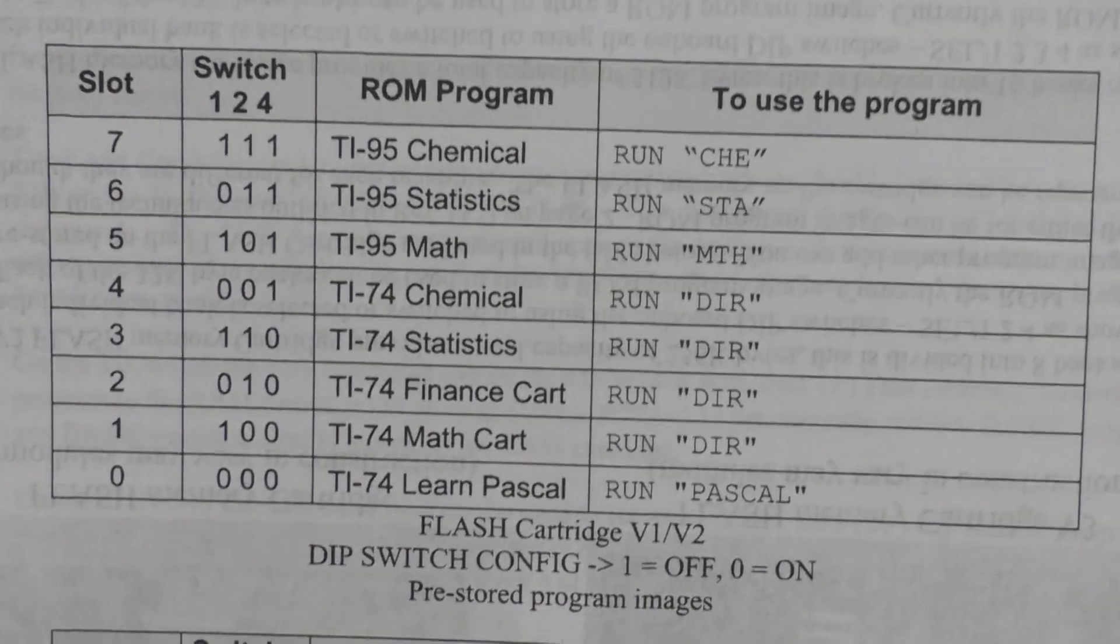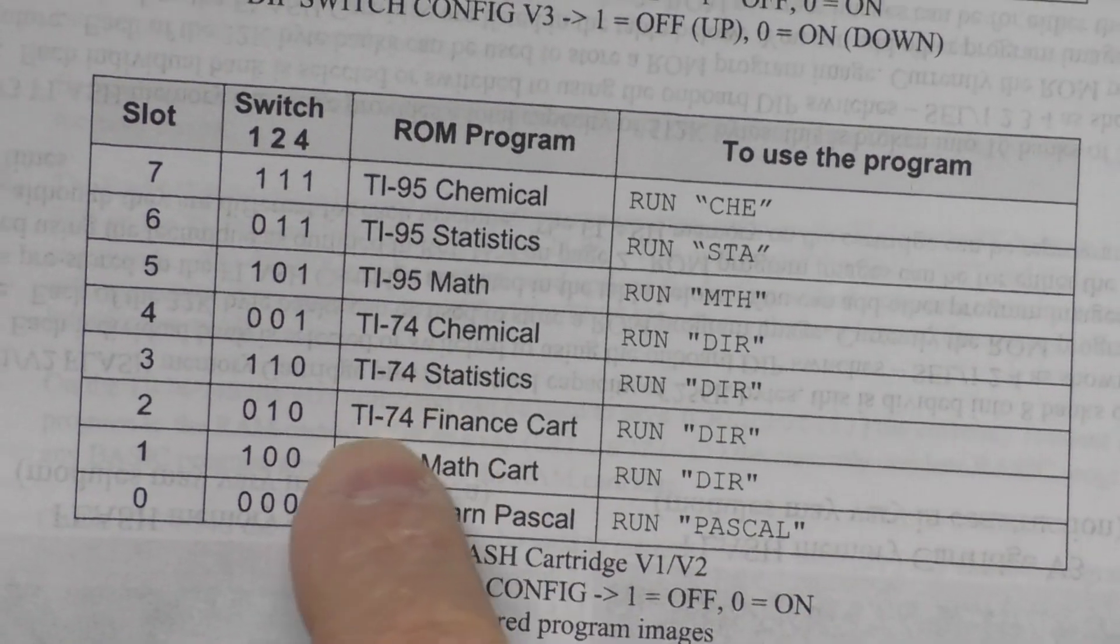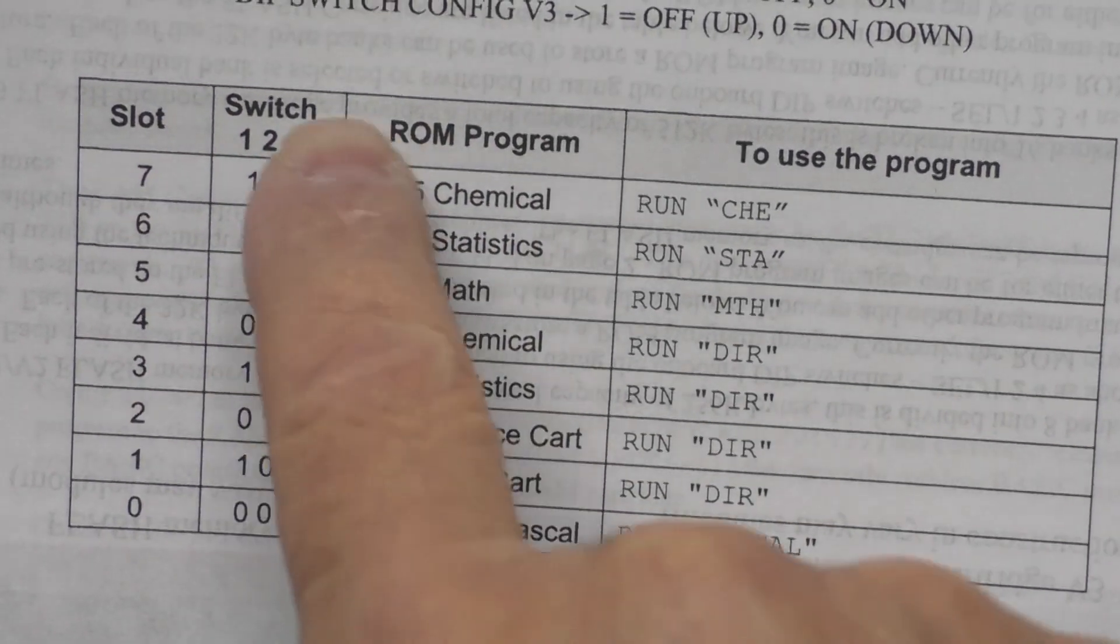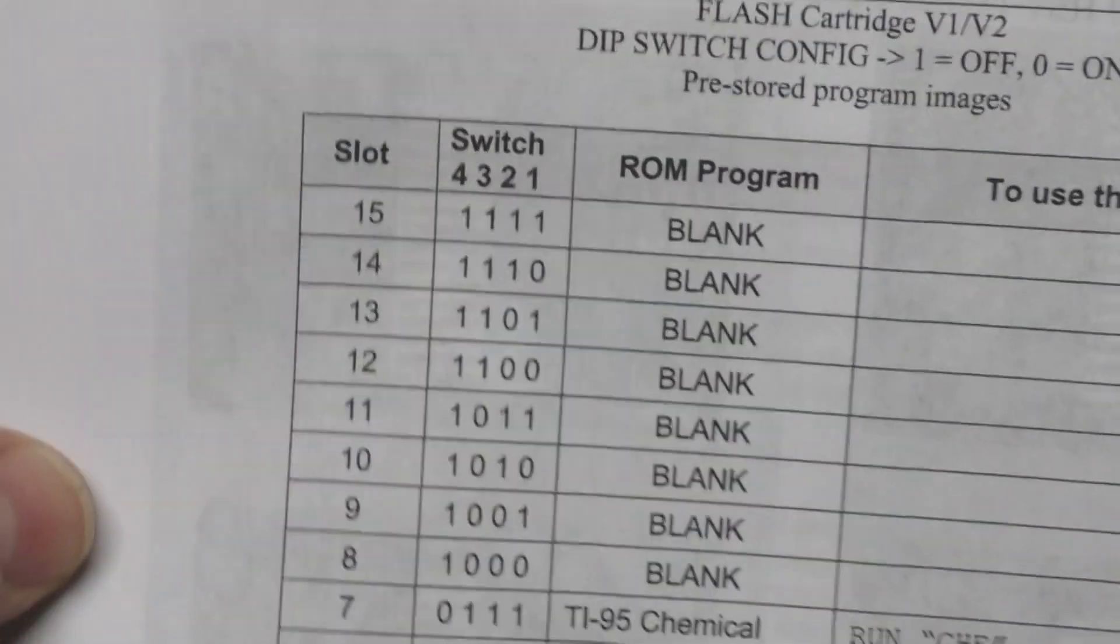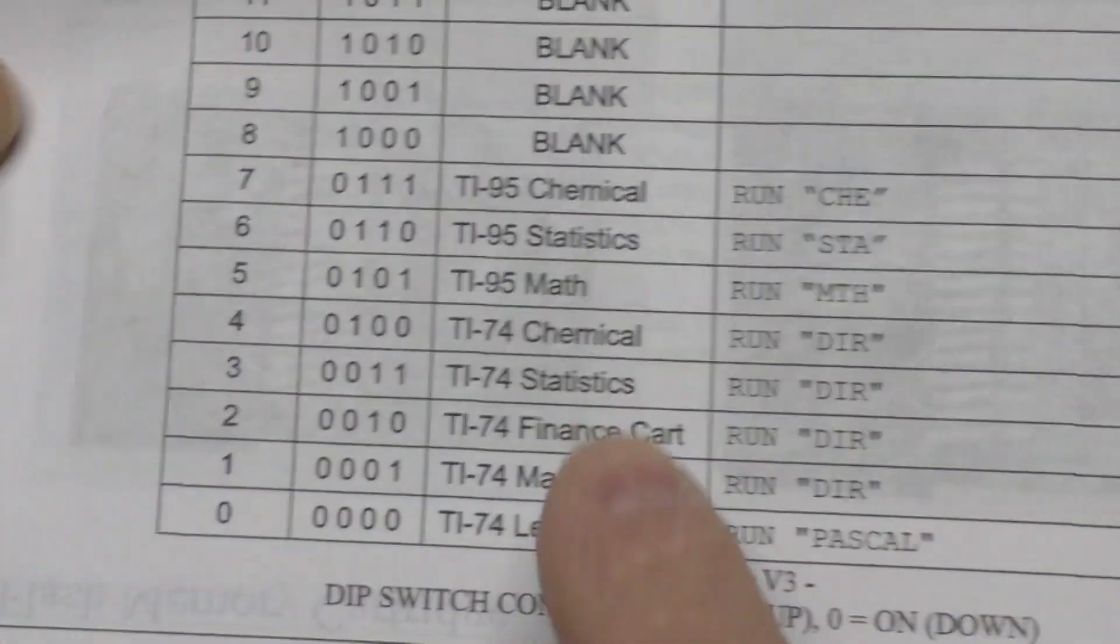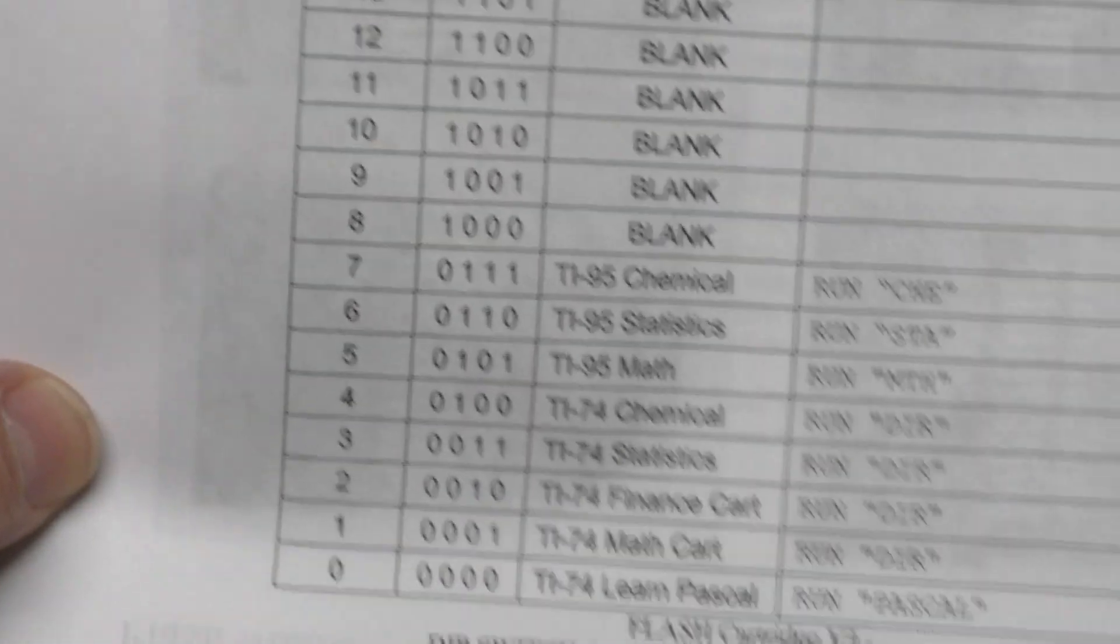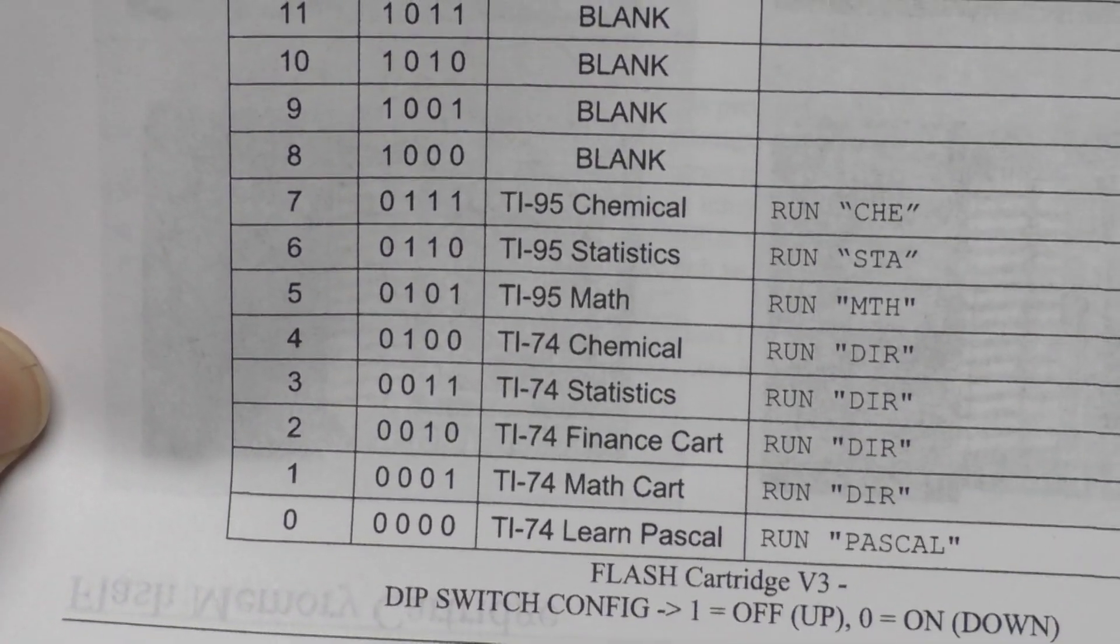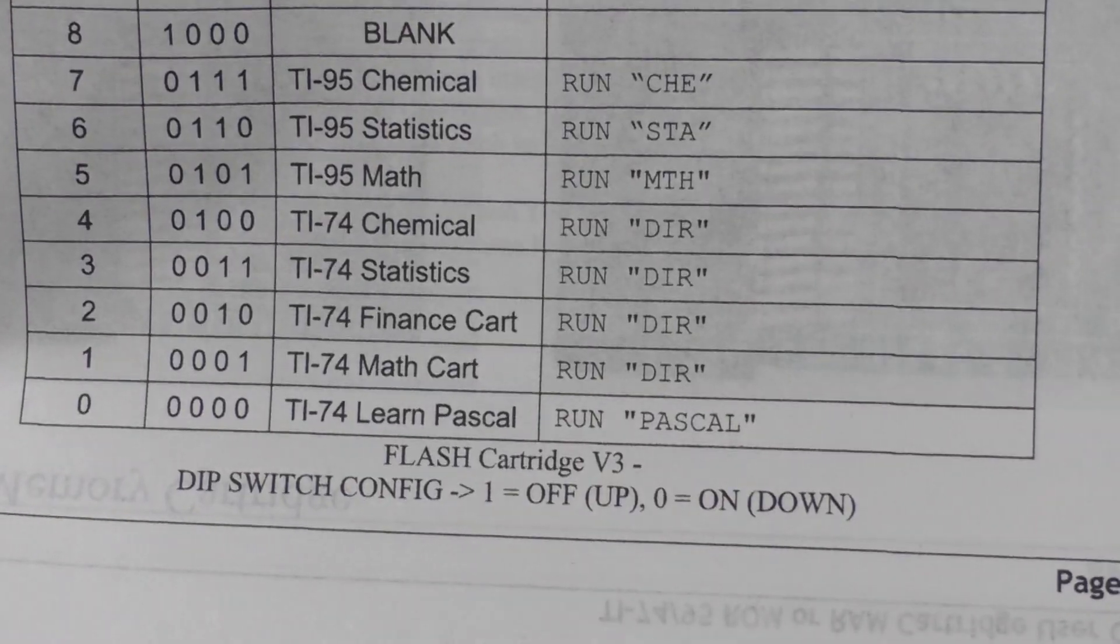Notice that it does show you all over the place which direction is on, which direction is off as far as the cartridge is concerned. For the original eight bank flash cartridges, this is the settings with the dip switches and the order that they're on the board. For the 16 bank, same thing. They're in a different order, so if you just look at the picture here, look at your switches on the board, it'll make a lot of sense.